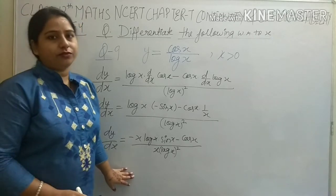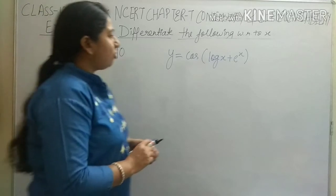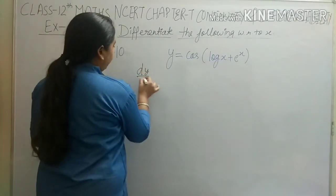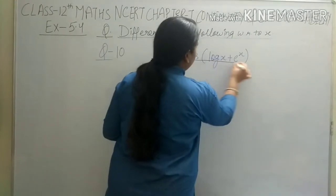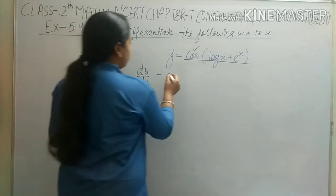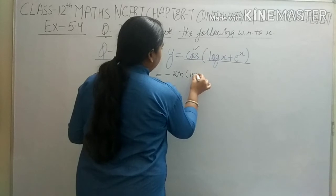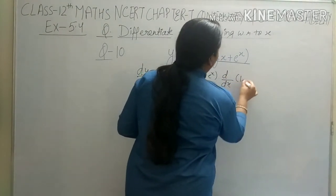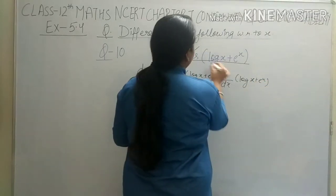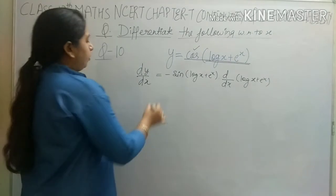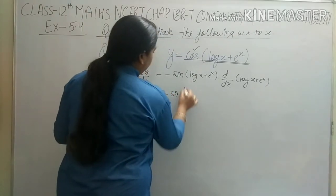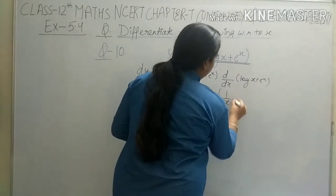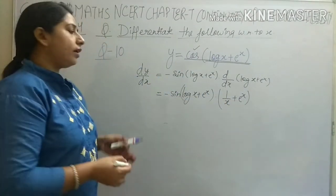Question number 10: y equals cos(log x + e^x). Differentiate with respect to x. dy/dx: first differentiation of cos gives minus sin(log x + e^x) as it is. Now we differentiate log x + e^x. Differentiation of log x is 1 upon x, and differentiation of e^x is e^x. So dy/dx equals minus sin(log x + e^x) times (1/x + e^x).